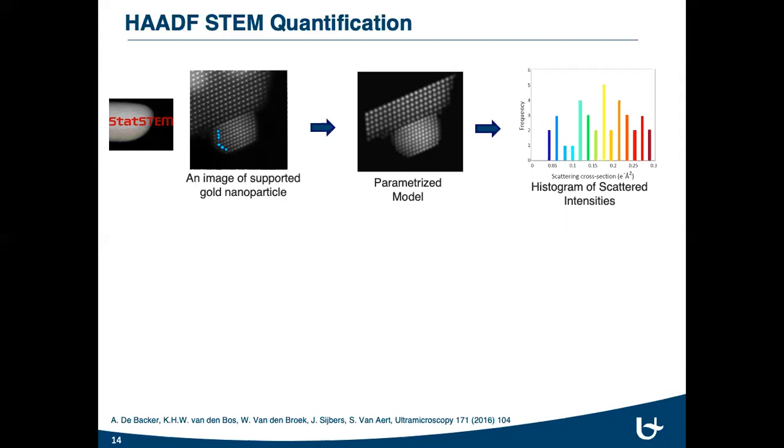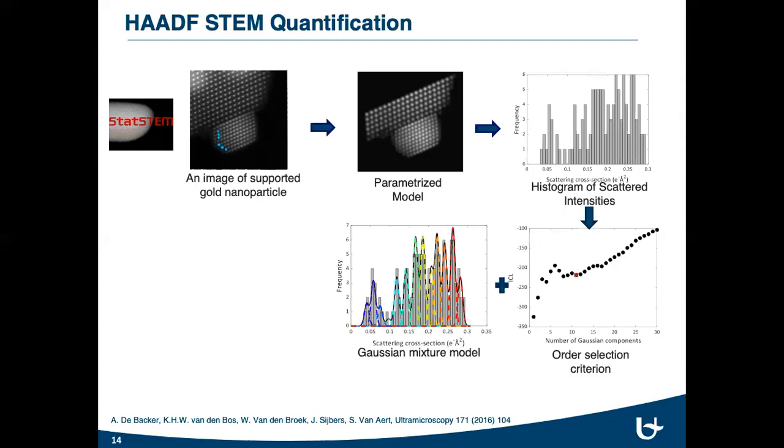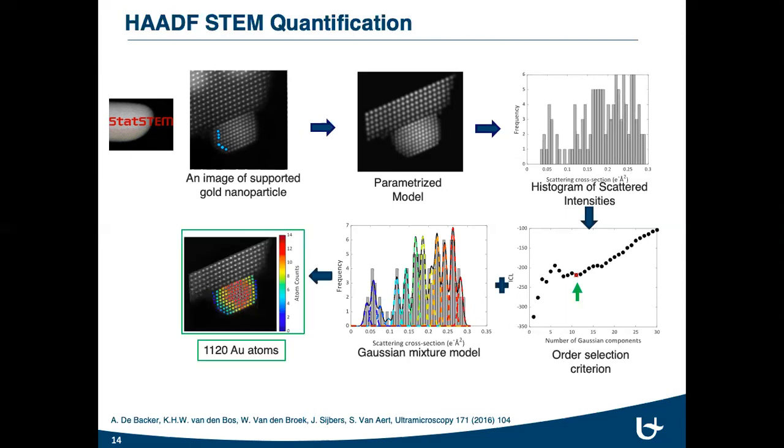However, due to the experimental noise in practice, the components are smeared out, which makes a visual interpretation impossible. Therefore, to determine the number of components and their locations, we use Gaussian mixture model and order selection criterion. This order selection criterion gives the statistically significant component usually at a local minimum. For example, if the local minimum value is 11, the total number of atoms in a column varies from 1 to 11. And in this manner, we can estimate the total number of atoms at each atomic column.